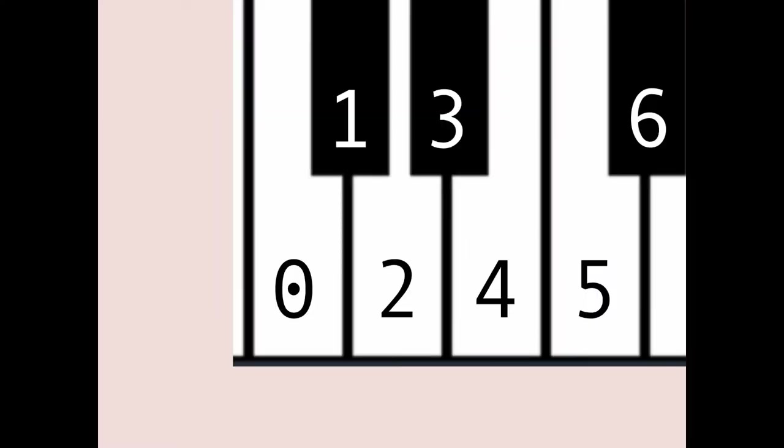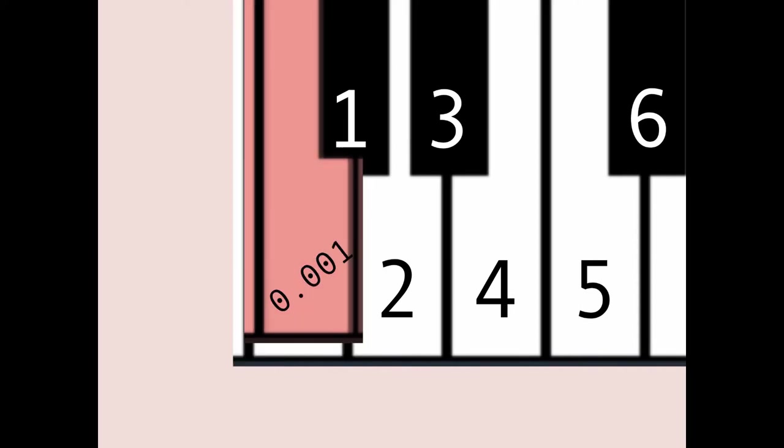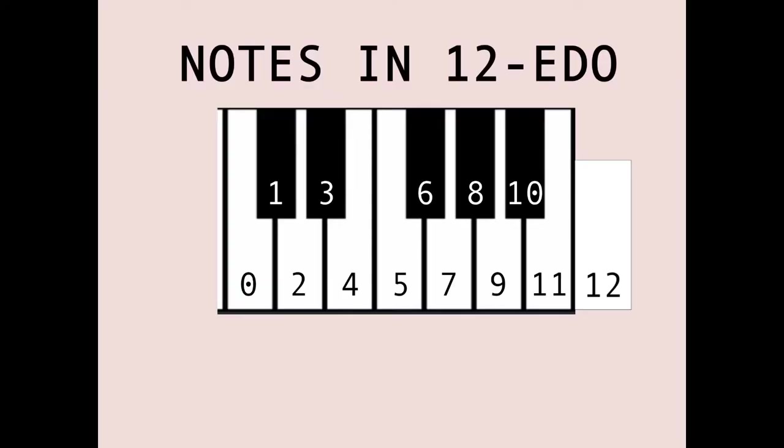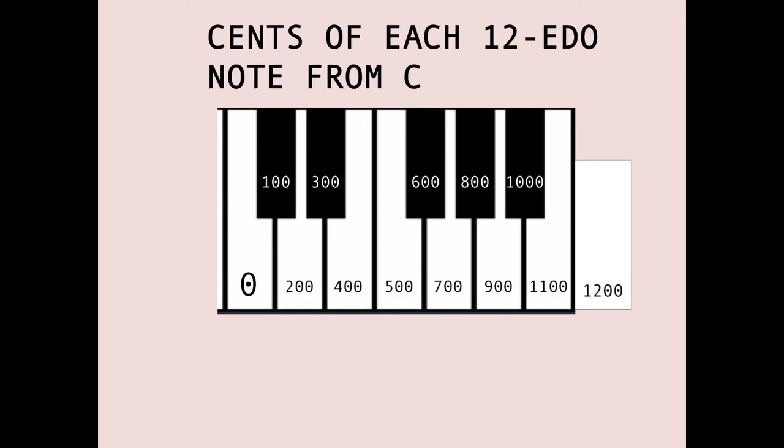One more thing to know: one twelve-hundredth of an octave is called a cent. A cent is thus the smallest unit of 1200-tone equal temperament, and there are one hundred cents in a standard half-step. Cents make it easy to talk about pitch distances by how they are related to 12 EDO.